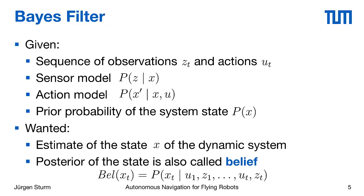This is now the basis for the Bayes filter. The idea is as follows: we have a robot that goes around and takes a sequence of observations Z1 to ZT, and during that it issues a sequence of actions or motion commands U1 to UT. It is also equipped with two models — a sensor model that describes how likely sensor readings are given a certain world state, and an action or motion model that describes how actions influence the world state. We generally assume we are given a prior probability of the system state, denoted by p.